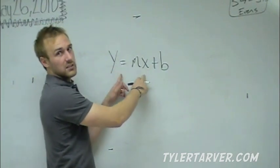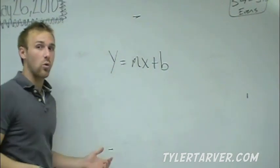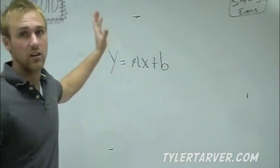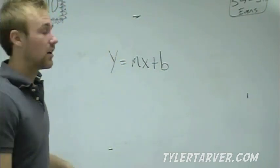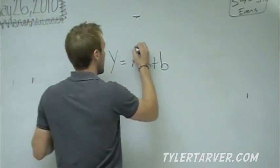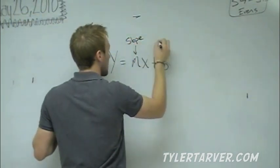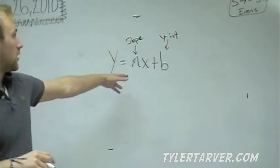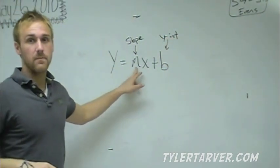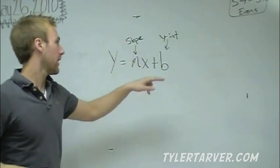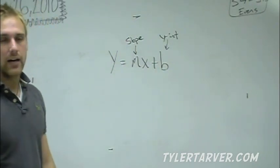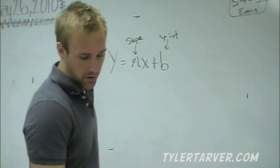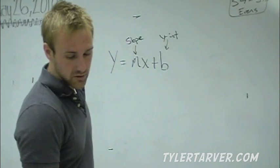The slope-intercept formula is: y equals mx plus b. X and y stay as x and y in this formula, but you can always plug in a coordinate that is on the line. This is the equation for a line. M is the slope, B is the y-intercept. M for slope, B for — well, bye — that's the y-intercept.